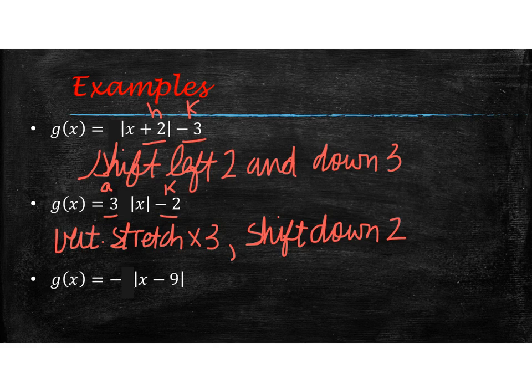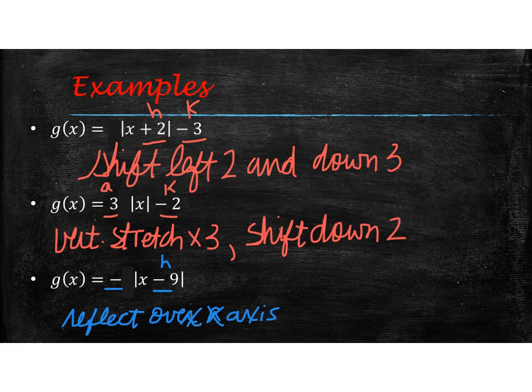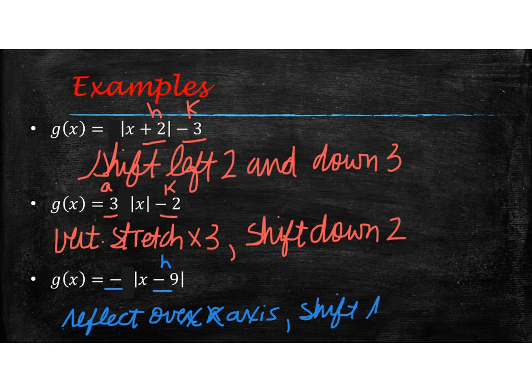Okay, and in the last example, we have the negative out front, and then we have the minus 9. The negative out front is a reflection, and then the minus 9 is an h. And then the h, of course, shifts left or right. So the first thing we're going to say is that it is a reflection over the x-axis. And then it will also shift to the right 9.